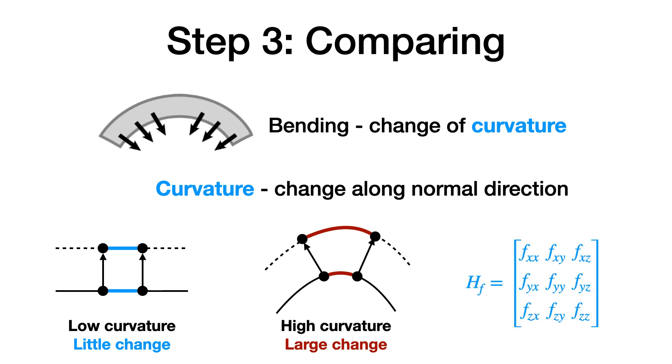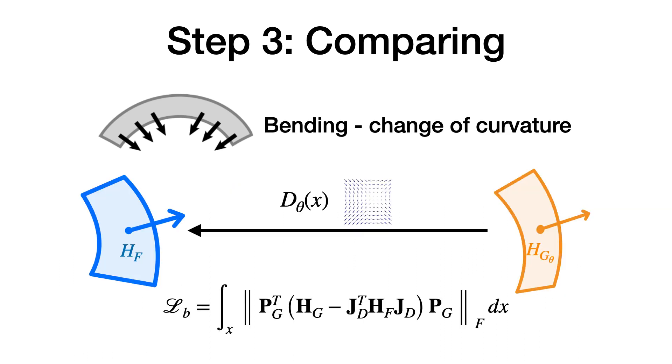Such change can be captured by the Hessian matrix of the signed distance function. With that, we define our bending loss to measure the change of curvature by computing the adjusted change of Hessian before and after deformation.